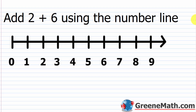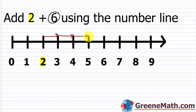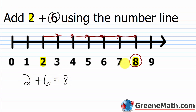Let's take a look at some examples. We want to add two plus six using the number line. The leftmost number — the two — is where we're going to start on the number line. Then we're adding six, so I'm going to go six units to the right: one, two, three, four, five, six units to the right. I'm at eight. So two plus six equals eight. All of us know that two plus six is eight — it's just to get the practice of doing it on the number line.